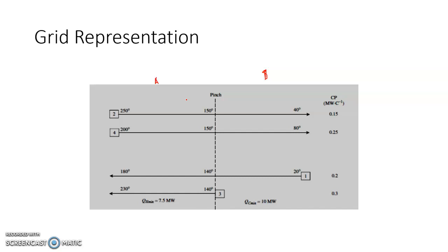Below pinch, hot streams move from pinch point 150 to their target temperatures of 40 and 80, while the cold stream moves from source temperature 20 to the pinch point at 140. The minimum hot utility is 7.5 megawatt and minimum cold utility is 10 megawatt for this particular problem.